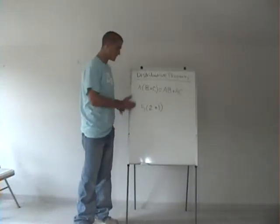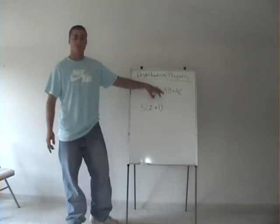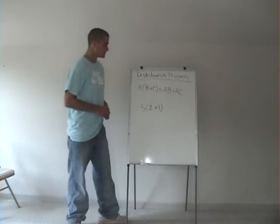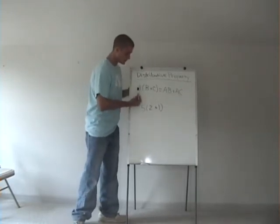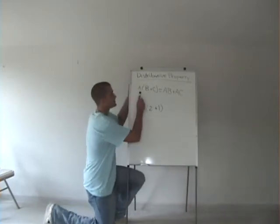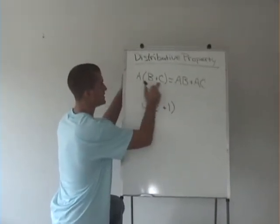The distributive property says that we can carry a number through a parenthesis without changing the value of the whole term. This is the definition of the distributive property: A times (B+C) equals AB plus AC.